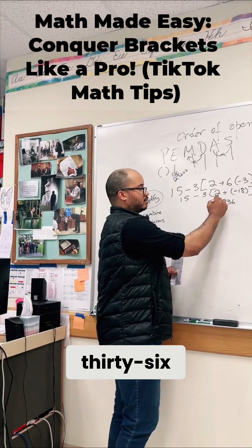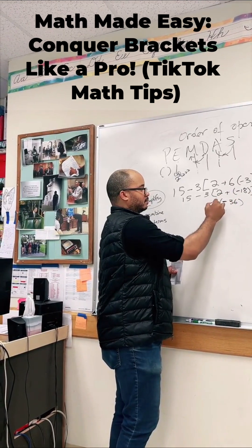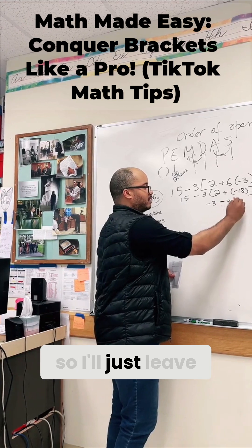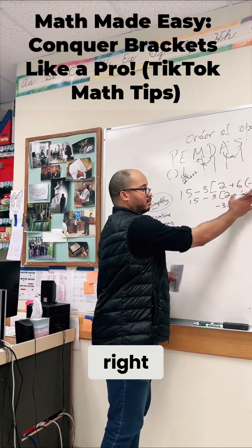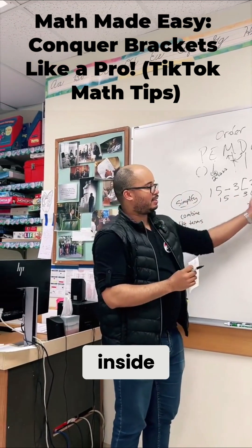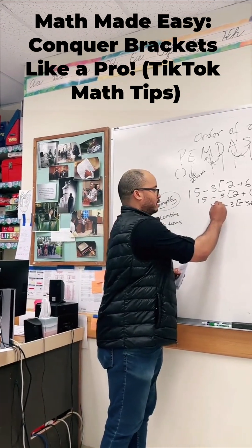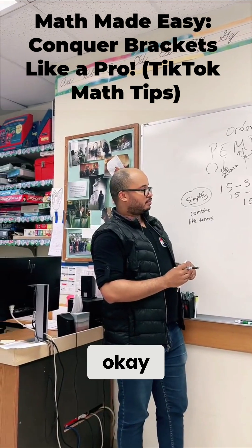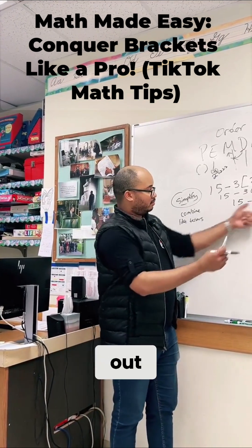Negative 36. We combined everything inside the bracket and we got negative 36. We're done with what's inside here, so let's move out.